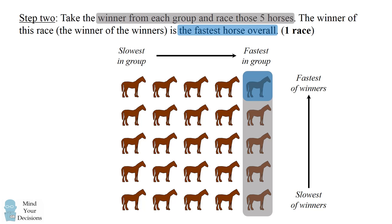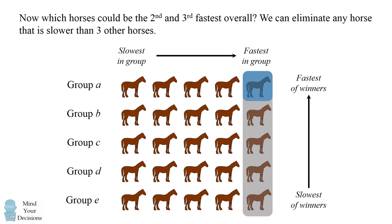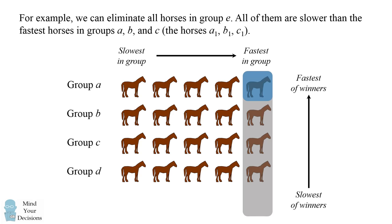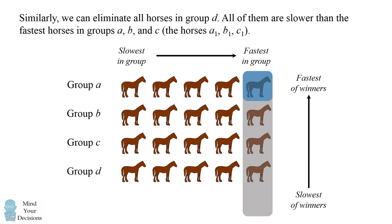To get the second and third fastest horses, we identify the groups: the fastest group is A and the slowest group is E. We use process of elimination — any horse slower than at least three other horses cannot be second or third fastest overall. We can eliminate all horses in group E, since every horse there is slower than the fastest horses in groups A, B, and C. For exactly the same reason, we can eliminate all horses in group D — all of them are slower than A1, B1, and C1.